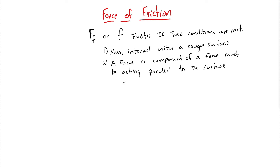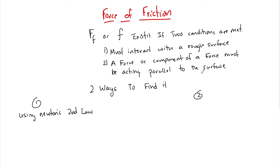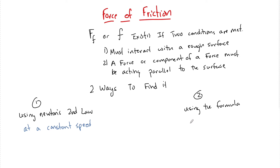There are really two different ways that we are going to find the force of friction. The first way is going to be using Newton's second law, and the other way is going to be using the formula for the force of friction. Generally Newton's second law is used when the object is at a constant speed — and remember, a constant speed can also mean stopped. The formula is used when the object is moving at some speed that is not constant, or when there aren't enough givens to solve Newton's second law.